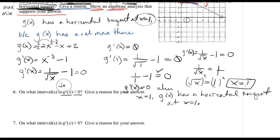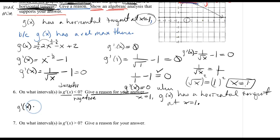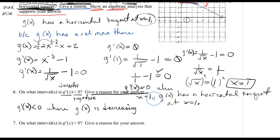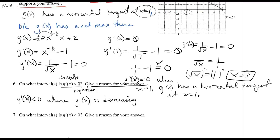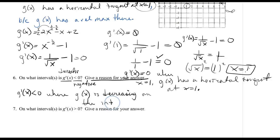Number 6 asks on which intervals is the derivative negative. My derivative is negative where my function is decreasing. Looking at the graph, my function reaches the maximum at x equals 1 and begins to decrease until x approaches infinity. Therefore, the interval is from 1 to infinity.